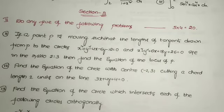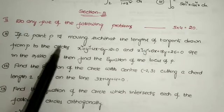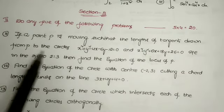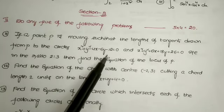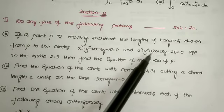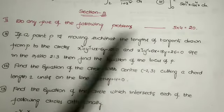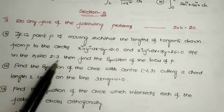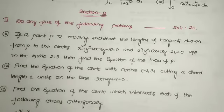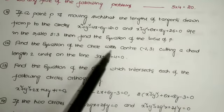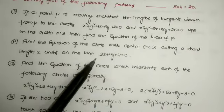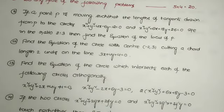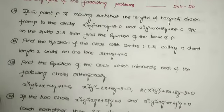Question 11: if a point P is moving such that the lengths of tangents drawn from P to the circles x² + y² − 4x − 6y − 12 = 0 and x² + y² + 6x + 18y + 26 = 0 are in the ratio 2:3, then find the equation of the locus of point P. Question 12: find the equation of the circle with center (−2, 3) and cutting a chord of length 2 units on the line 3x + 4y + 4 = 0.